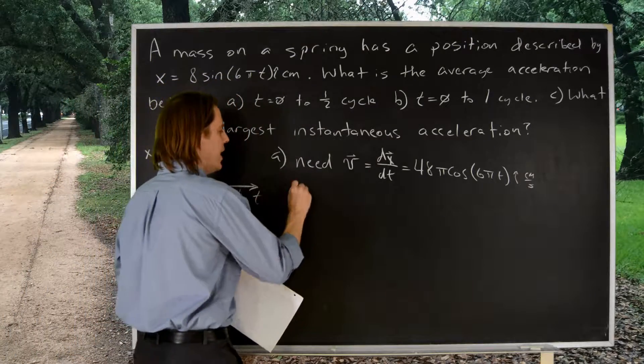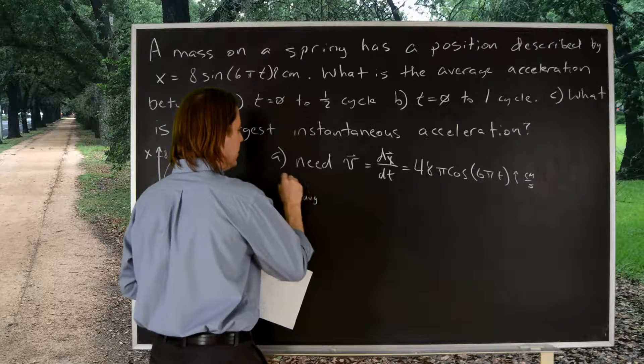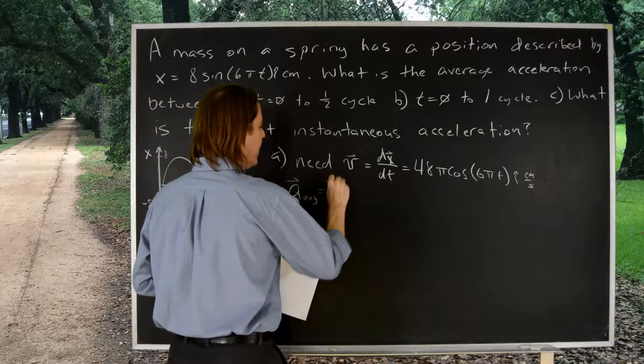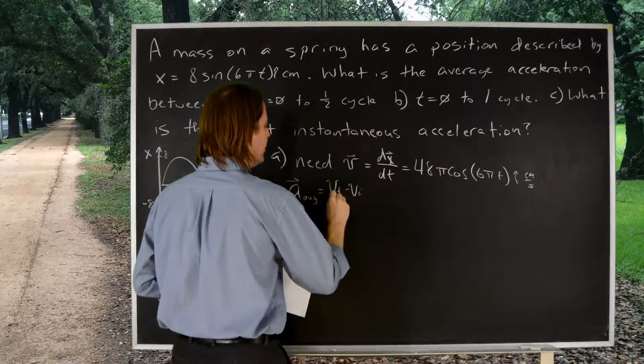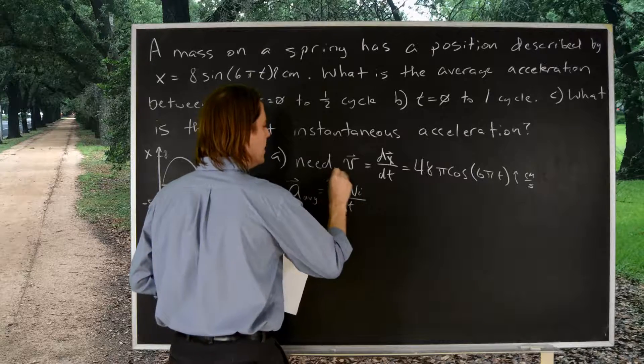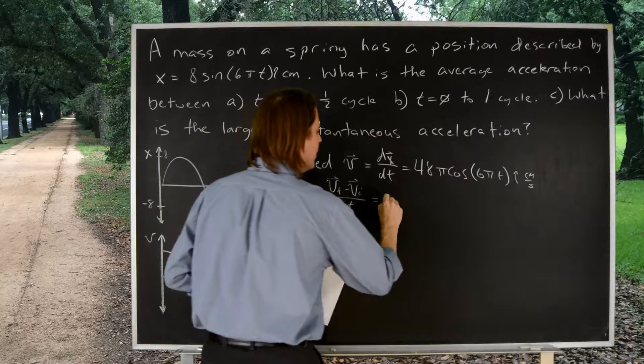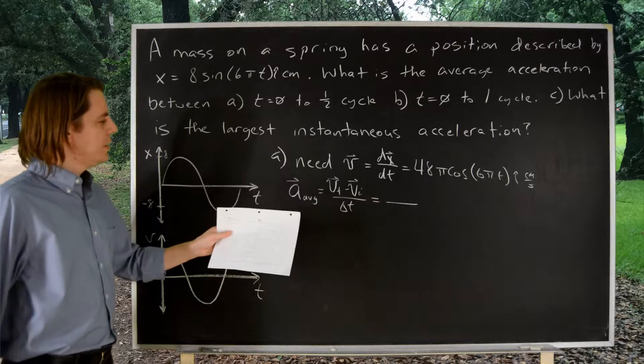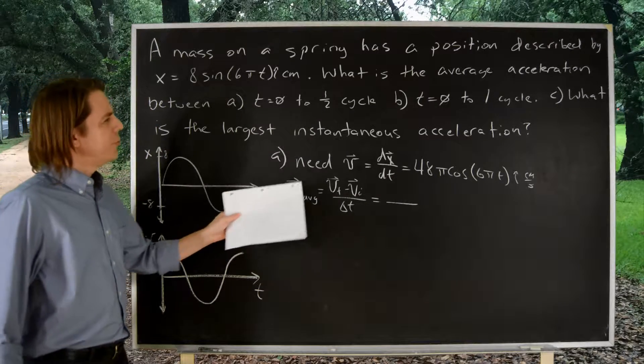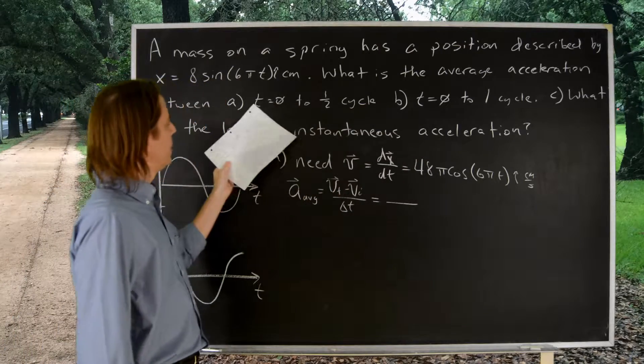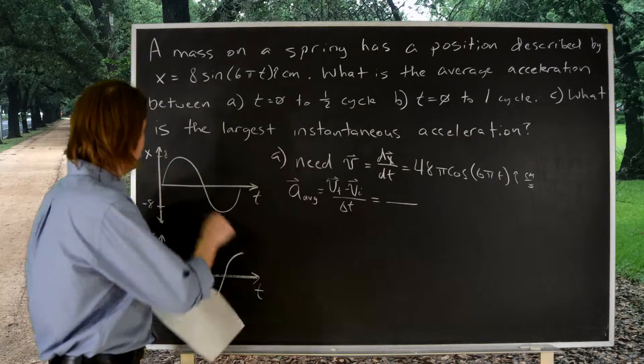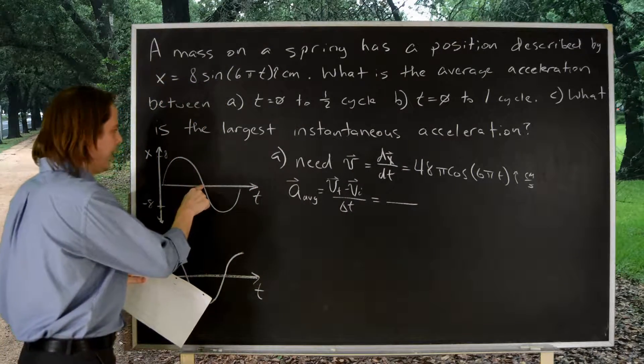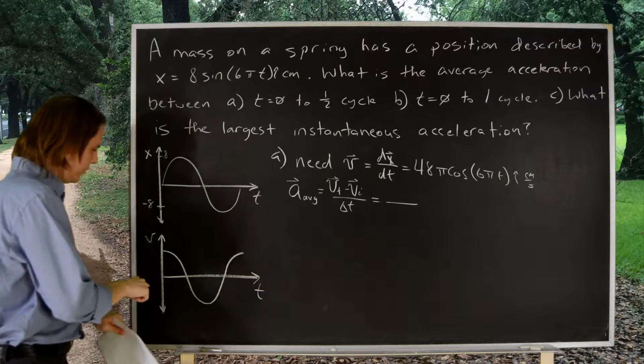So, now, we know the average acceleration is the final velocity minus the initial velocity over delta t. Oh, they're all vectors. All right. Final and initial. Well, we care about the point at zero and a half cycle. So, we care about here and here. And we don't really care about position. We care about velocity. So, let's see.